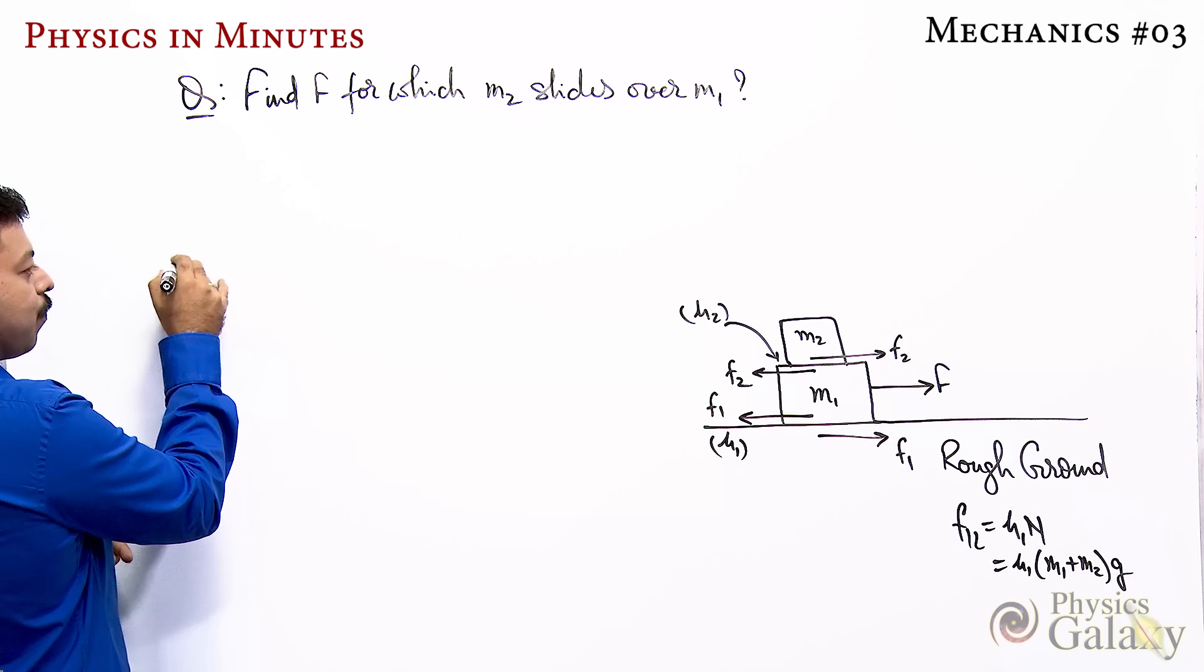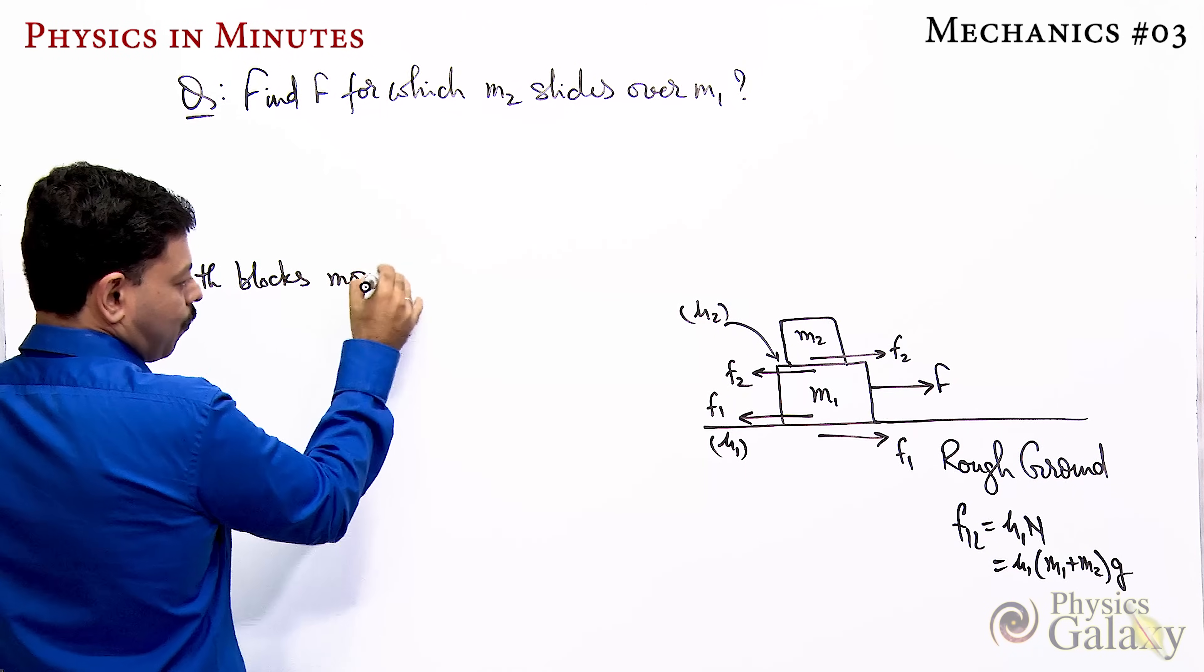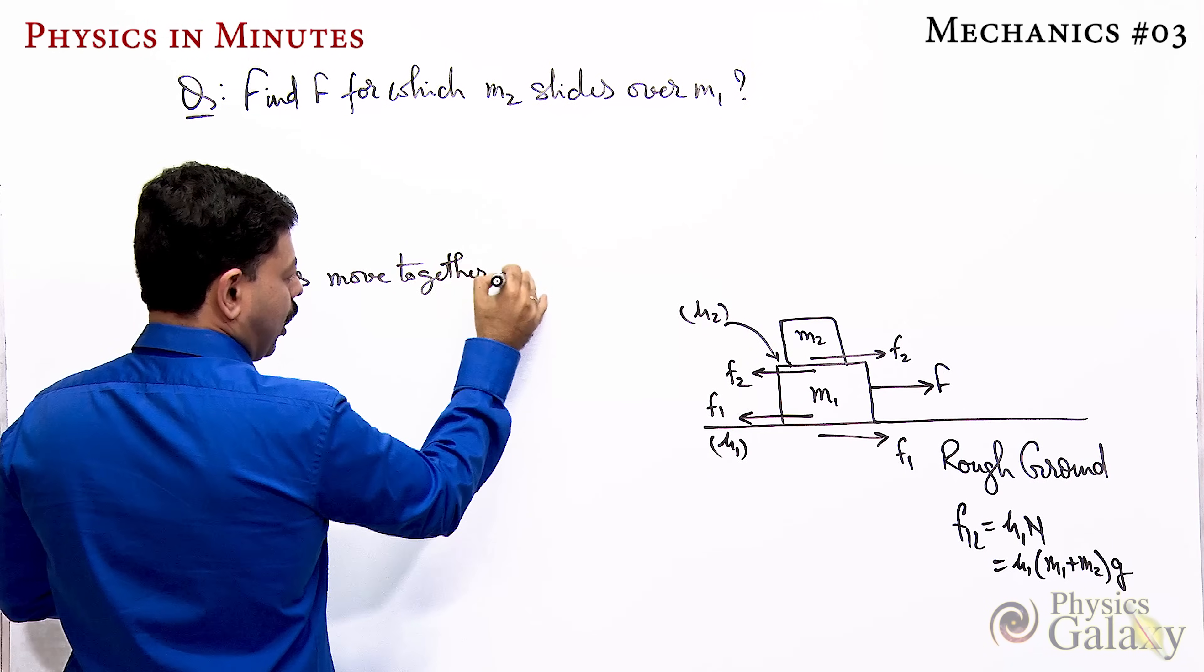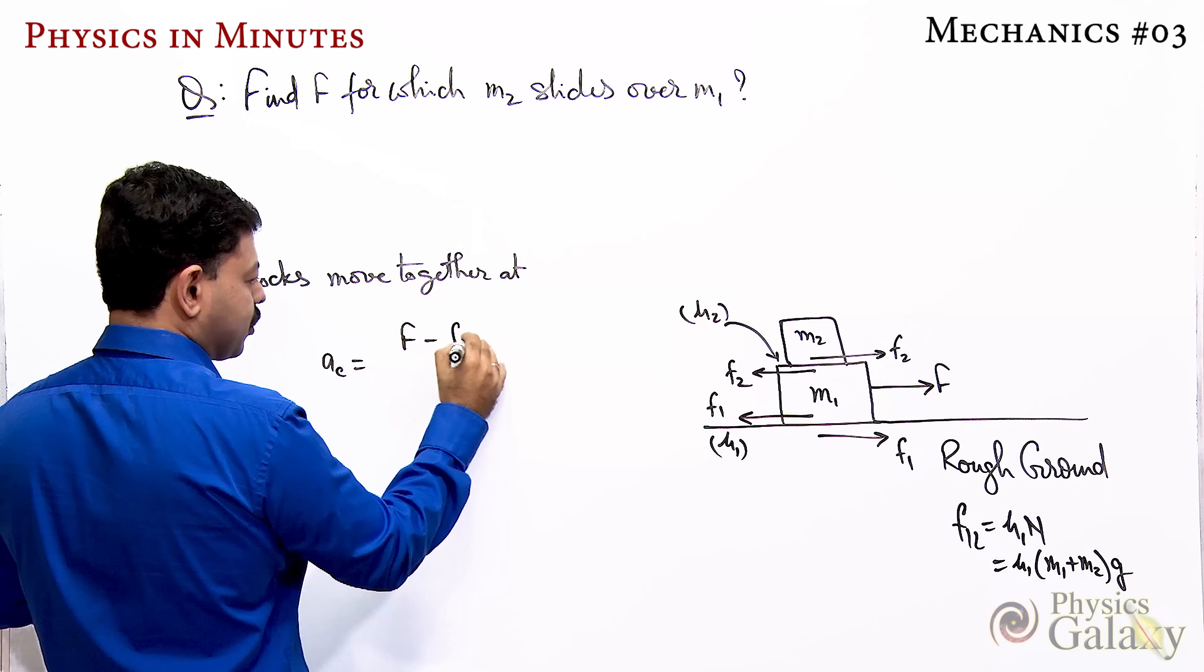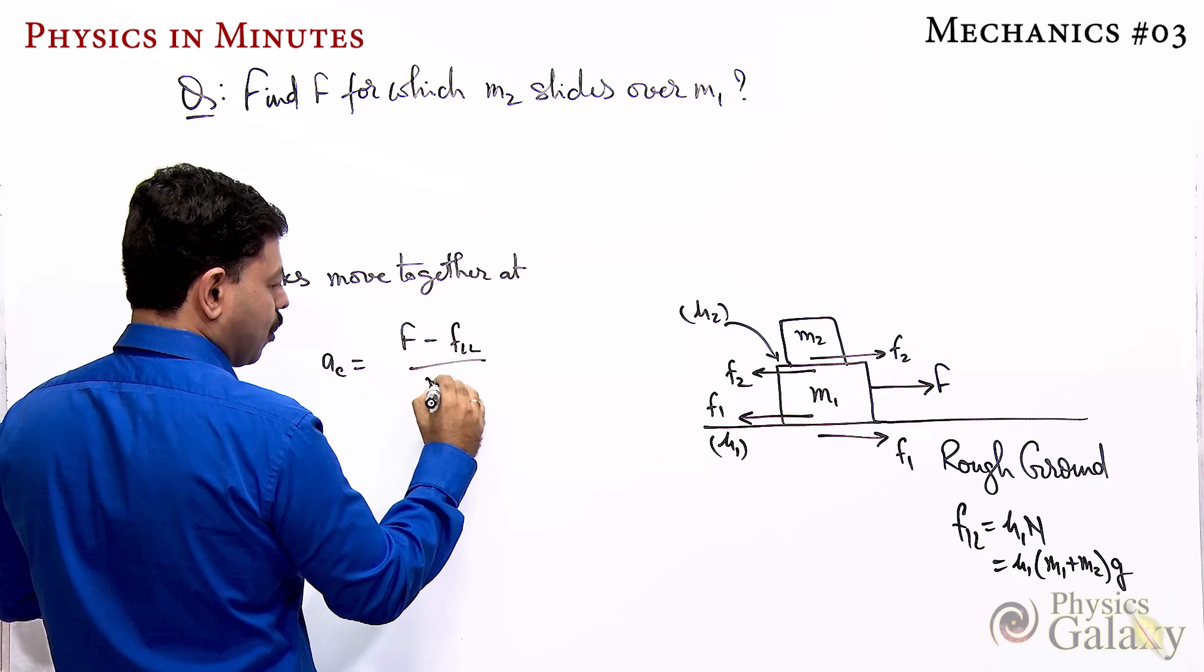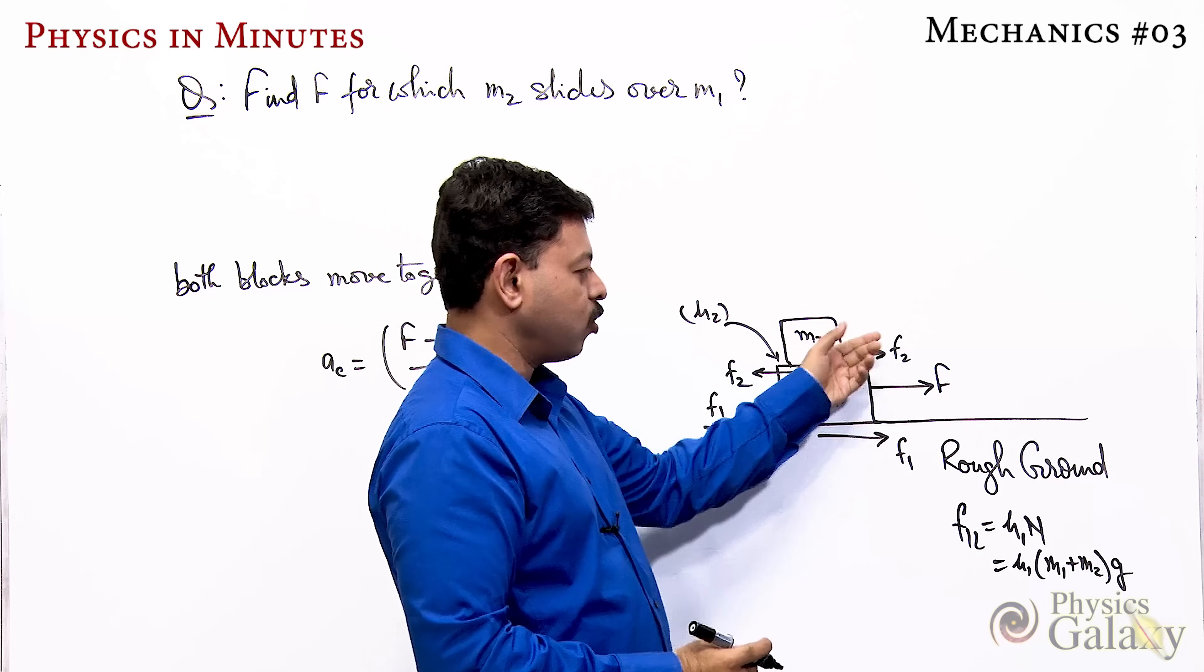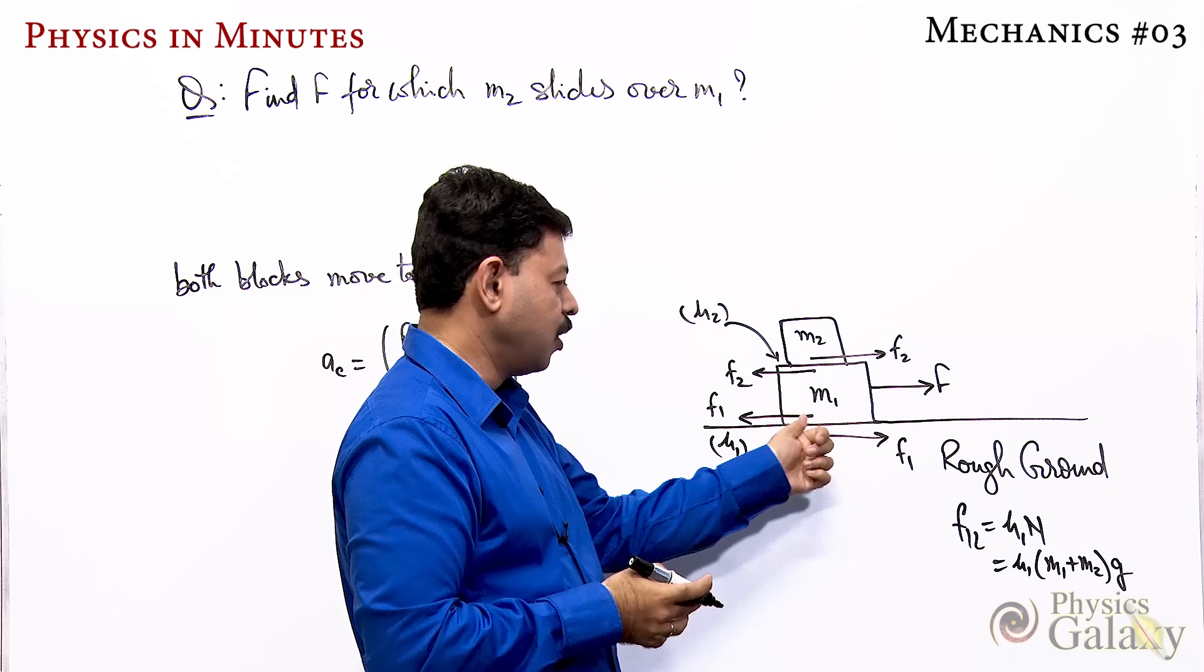So we can say both blocks move together. The common acceleration of the system will be (F - f1 limiting) upon (m1 + m2). Since both are moving together, f2 has no significance. Since they're moving together, f2 is an internal force.